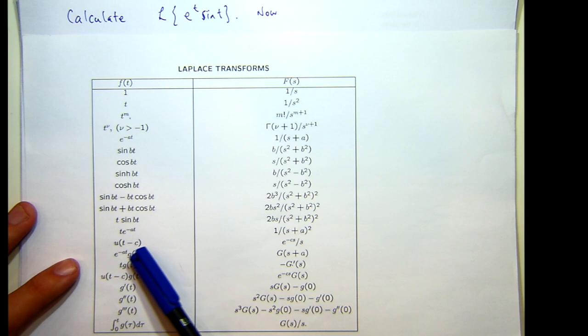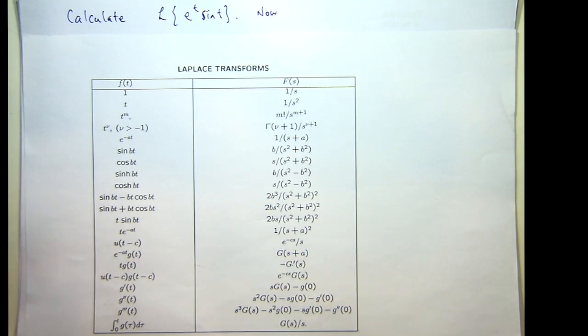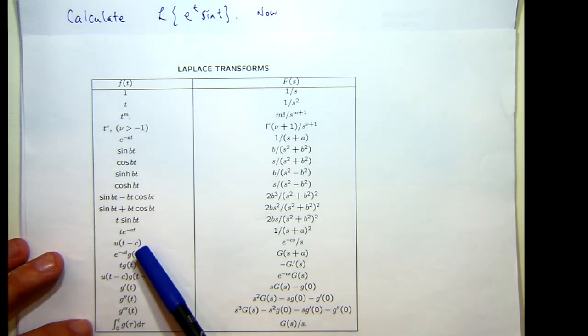So let's use this and if I look over here, a is a constant by the way, I see it's big G of s plus a where big G of s is the Laplace transform of little g.